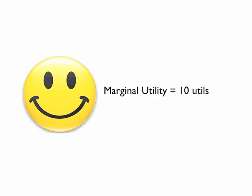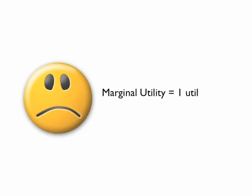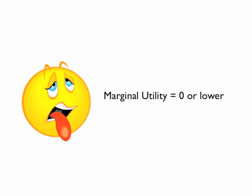If the slice of pizza is very satisfying, the marginal utility score will equal 10 utils. As the consumption of pizza continues and it no longer is satisfying, the marginal utility score will gradually move from 10 to 1 utils. If consumption continues, it may actually take away from your satisfaction and you may start to feel sick — the marginal utility score will be zero or lower.